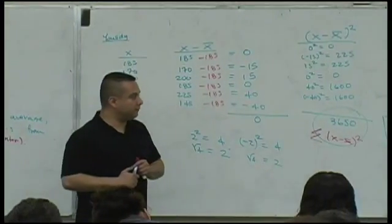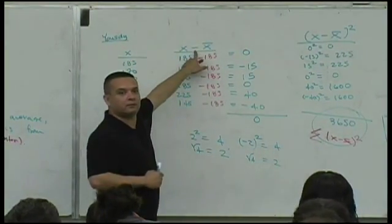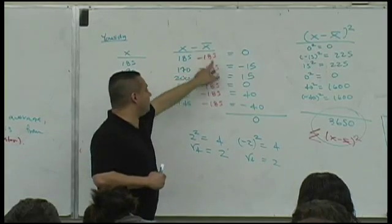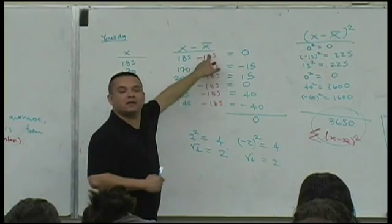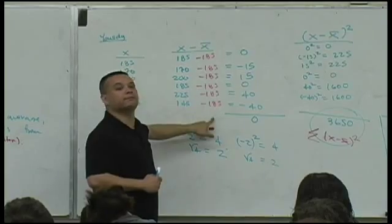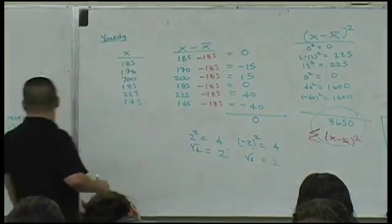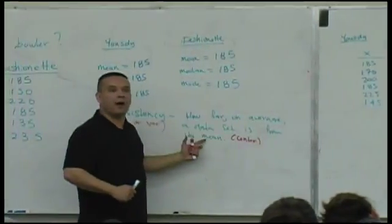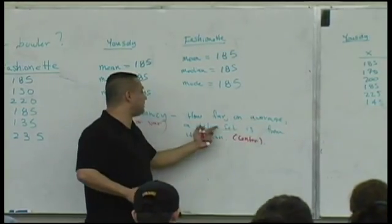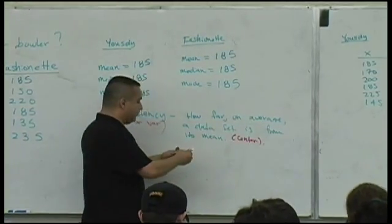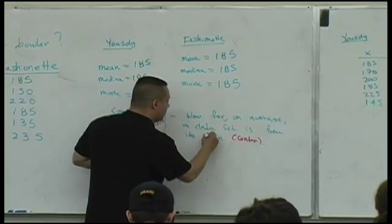Say that again? 185 is the median, yes. No, no. 185 is the mean, sorry. The mean is mean? Because you're going with this idea. How far on average a data set is from its mean, its center. That's, this is what we're talking about.